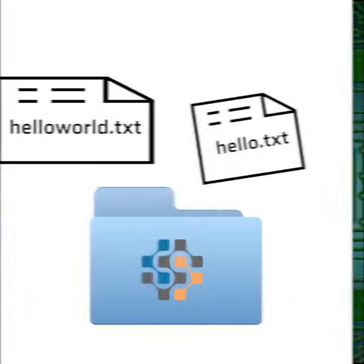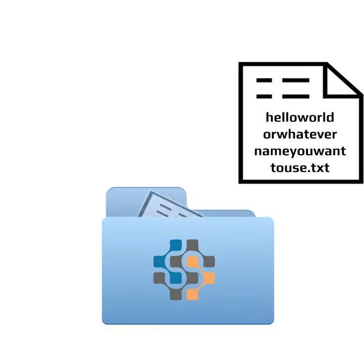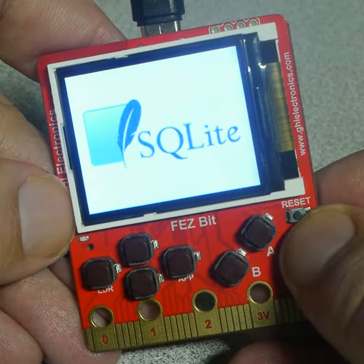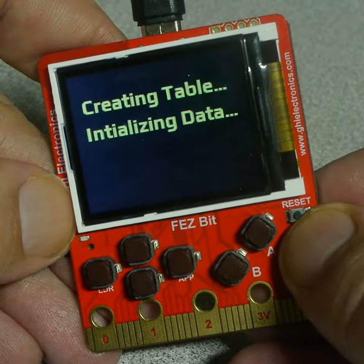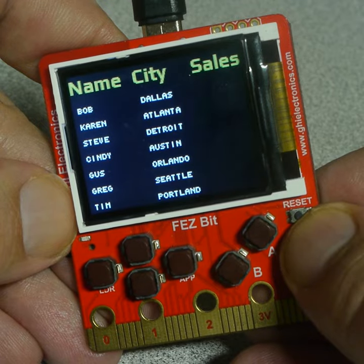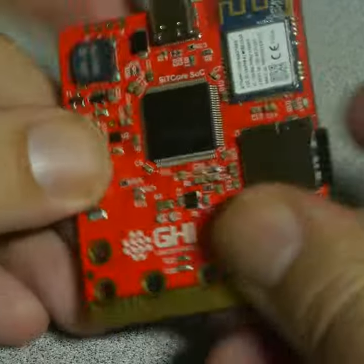The system fully supports directories and long file names, only limited by the FAT file system itself. SQLite databases are also supported and can be created and accessed in memory or on storage devices.